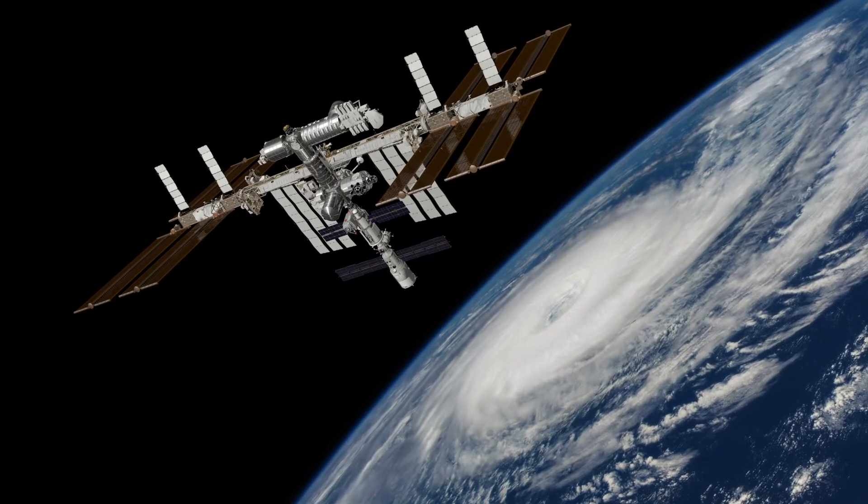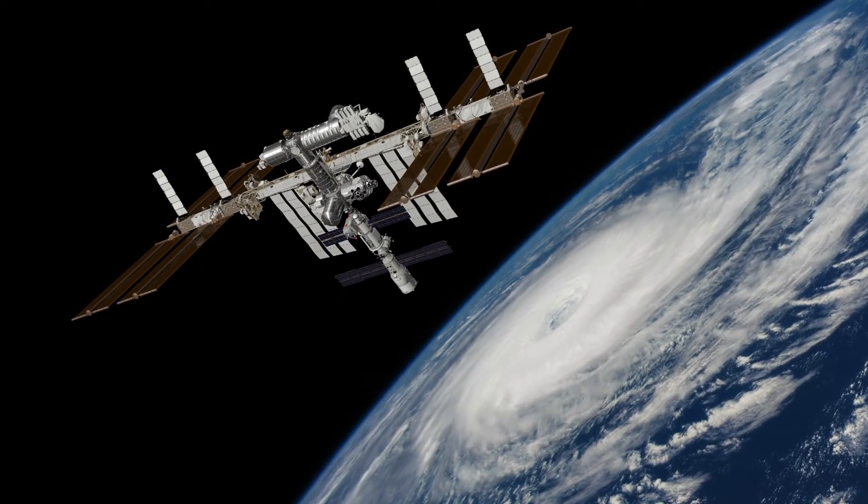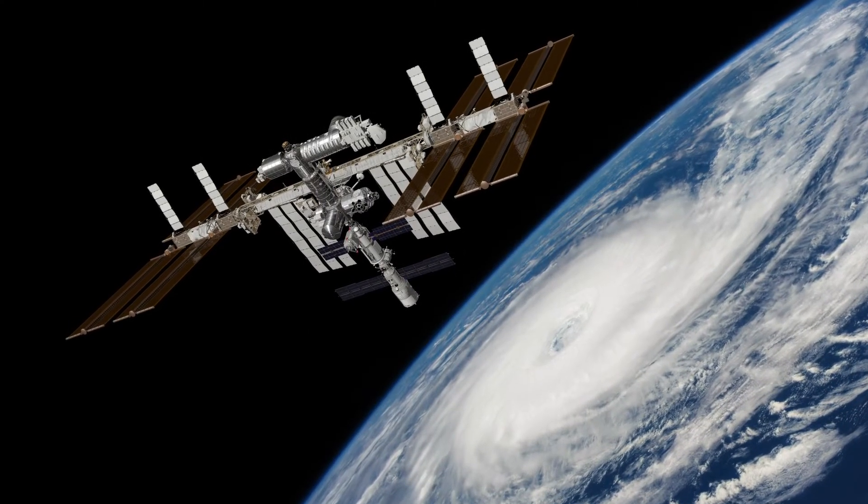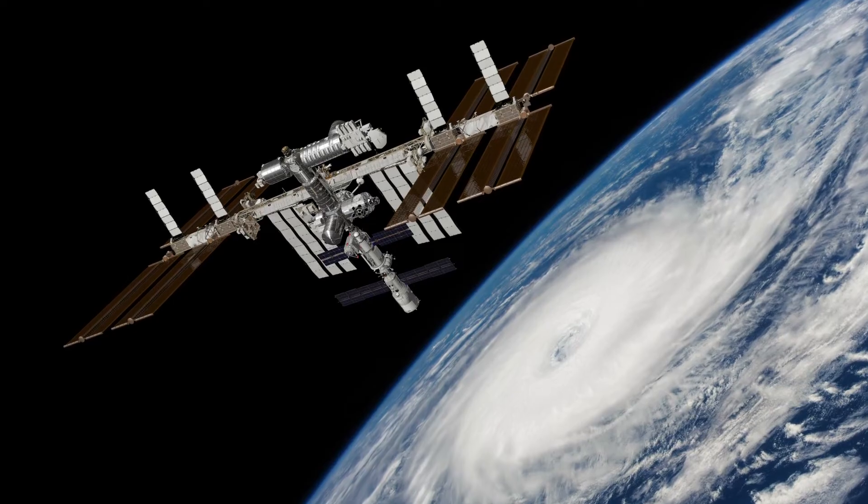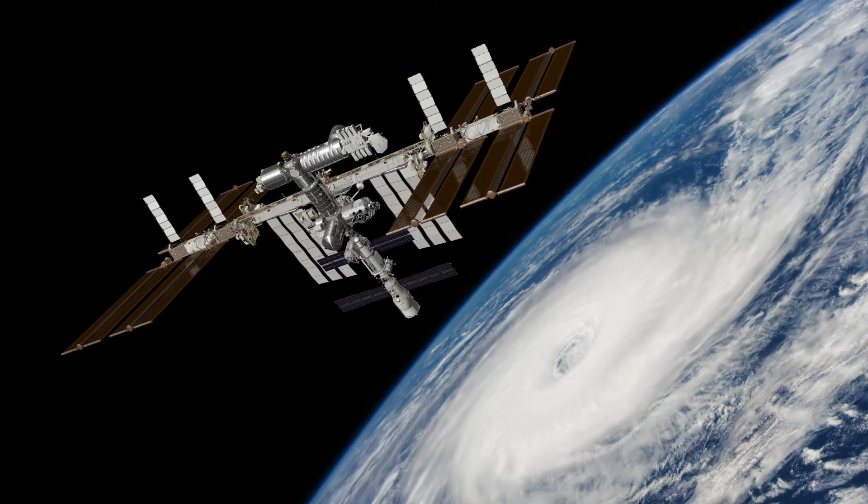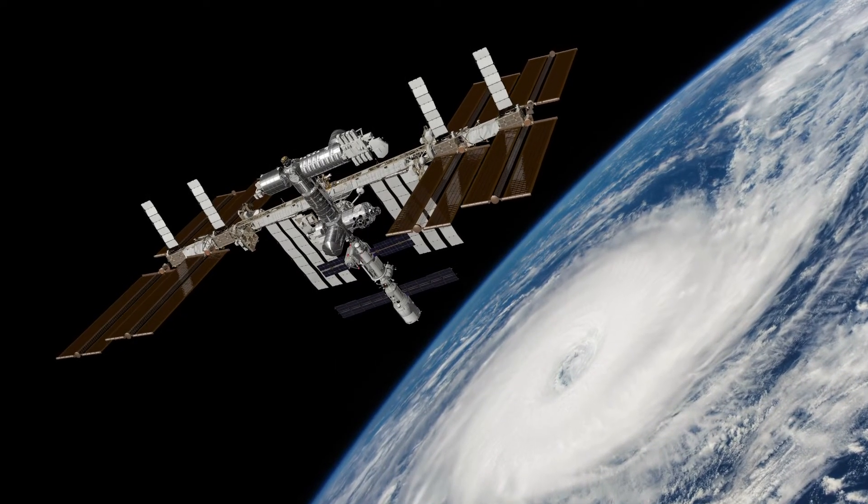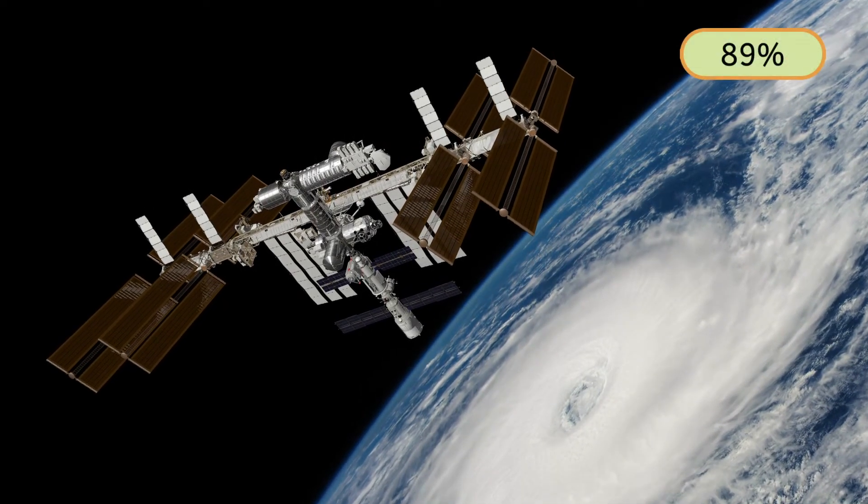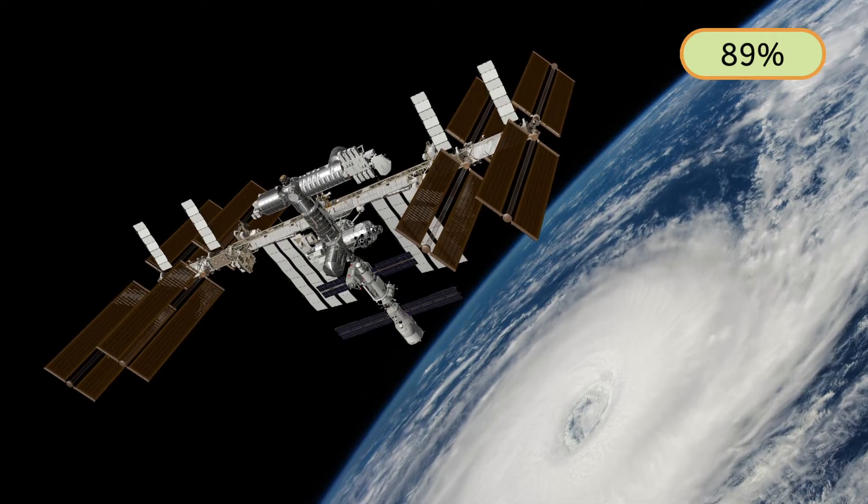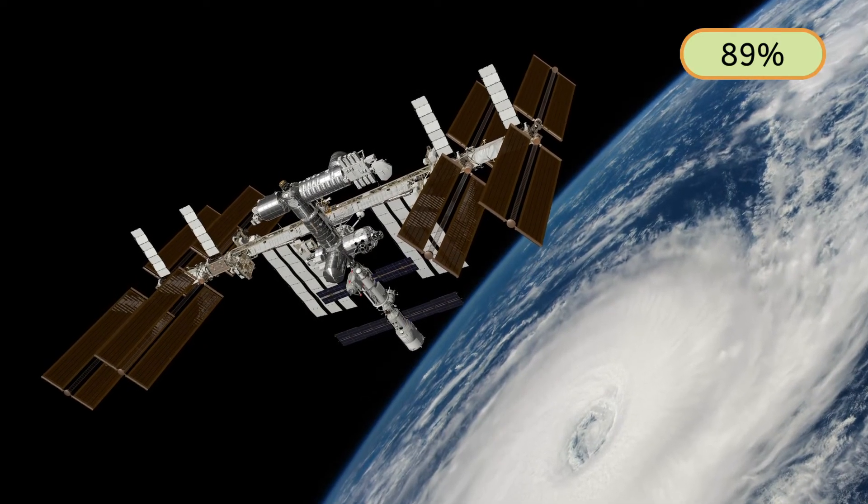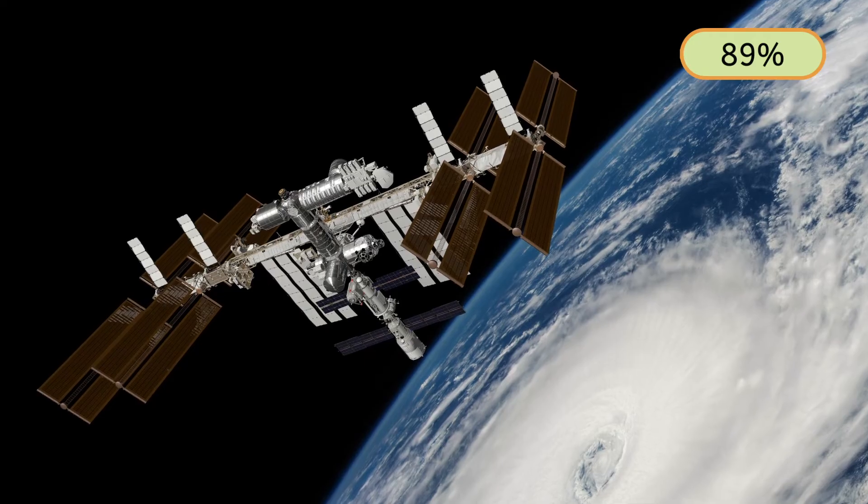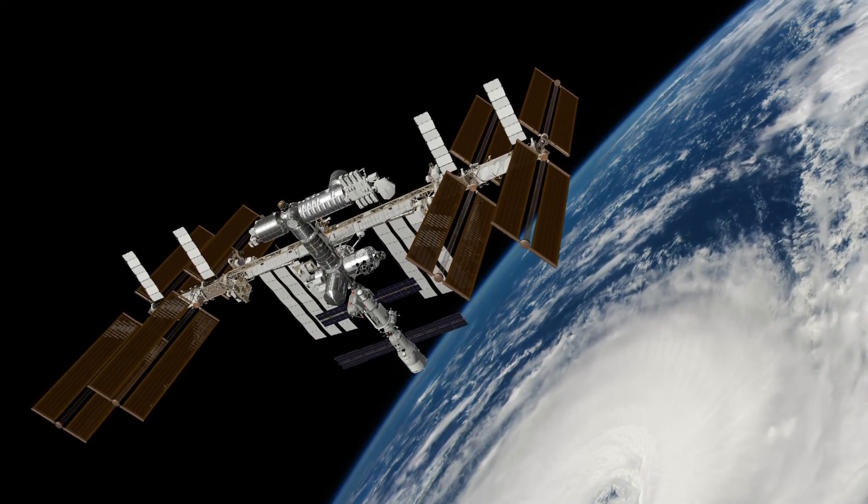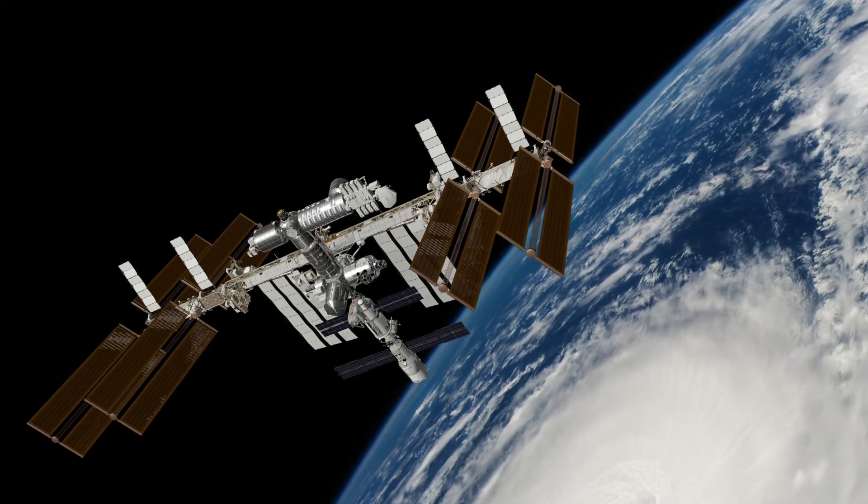For example, astronauts aboard the International Space Station are still in Earth's orbit. So, they're still experiencing Earth's gravity. But, because they're about 260 miles away from the surface of the Earth, the force of gravity is only about 89% as strong as what we experience on the ground. If they continued past the space station, the gravitational pull between the astronauts and the Earth would continue to get smaller and smaller, until they didn't feel it at all.